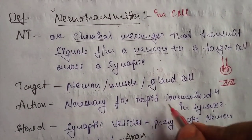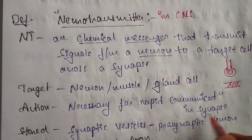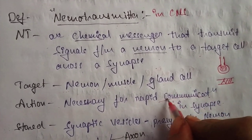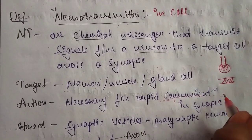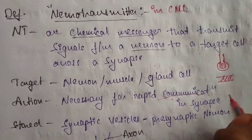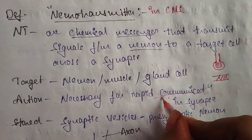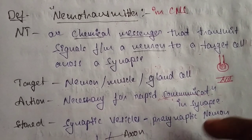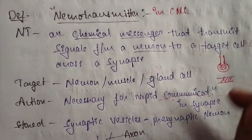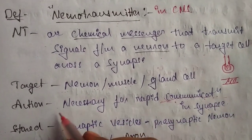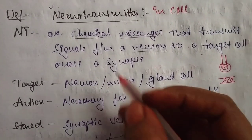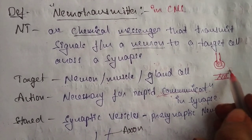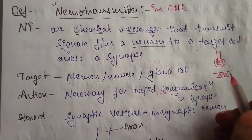It is necessary for rapid communication in the synapse. Rapid communication means the communication process runs and the action potential is generated. Communication between one neuron to another neuron runs rapidly, and it is necessary for rapid communication in the synapse.